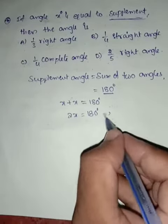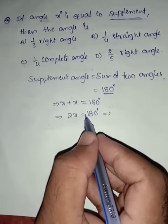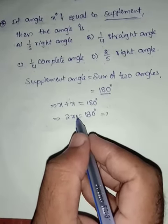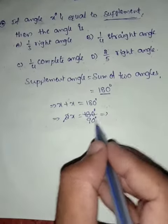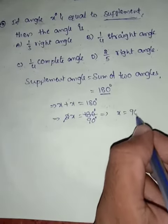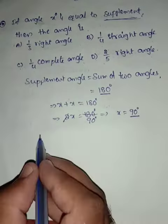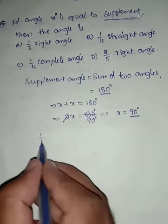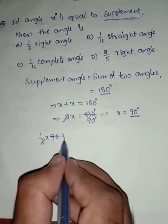x plus x equals 2x, and 2x equals 180 degrees. Dividing both sides, x equals 90 degrees. So x is a right angle, which is 90 degrees.